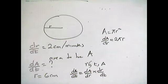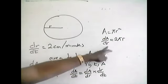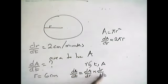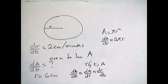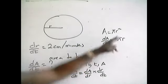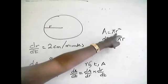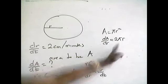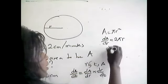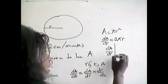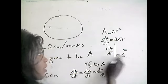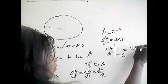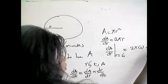So that is the differential of the area. Now we have dR/dT and dA/dR. The value of R we are going to use is 6. So dA/dR when R is 6 is 2π multiplied by 6, which gives us 12π.